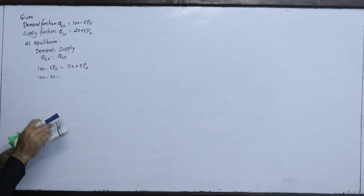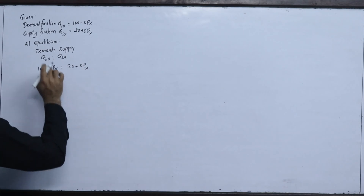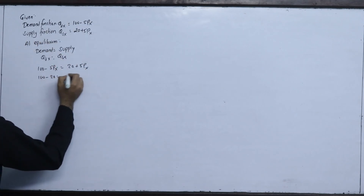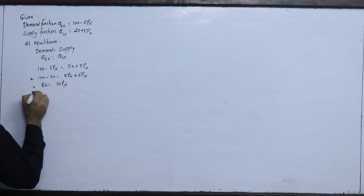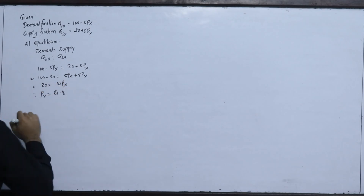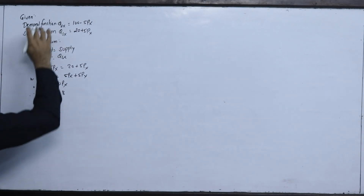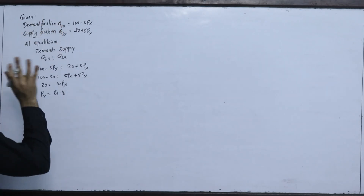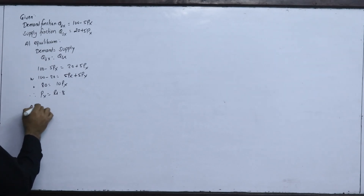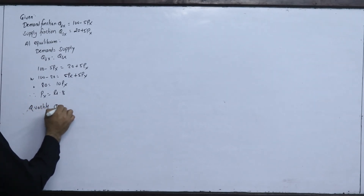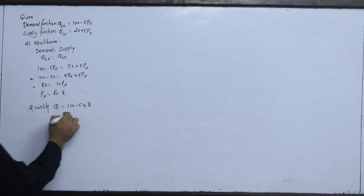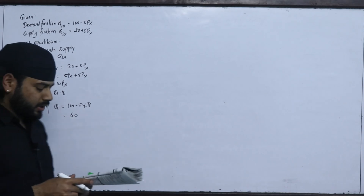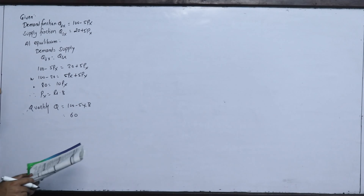Setting up the equation: 100 - 5Px = 20 + 5P. Solving for the equilibrium price gives P = 8. The quantity Q = 100 - 5 × 8 = 60 units. So the equilibrium demand quantity is 60.